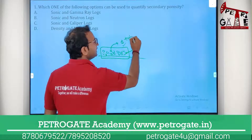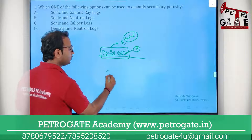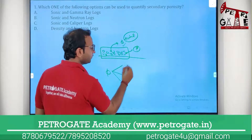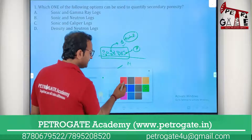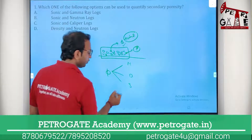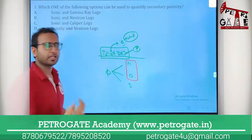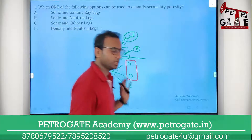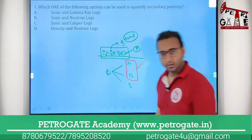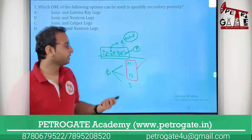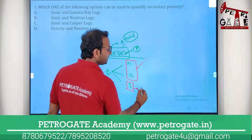To calculate porosity, I have three kinds of logs: neutron, density, and sonic. Neutron and density logs measure total porosity — meaning the combination of primary and secondary porosity, whatever porosity you have. The sonic log, however, measures only the primary porosity.